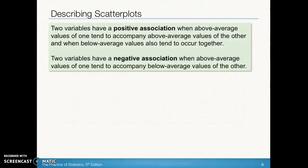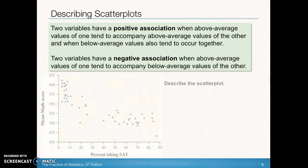When we talk about direction, we're specifically talking about what do we see as we read the graph from left to right. Do we see that as the explanatory variable gets higher, the response variable gets higher? That is a positive association. When we see a negative association as we read from left to right, we're going to see it going downward from left to right — as the explanatory variable gets larger, we see a decrease or a smaller value in the response variable.